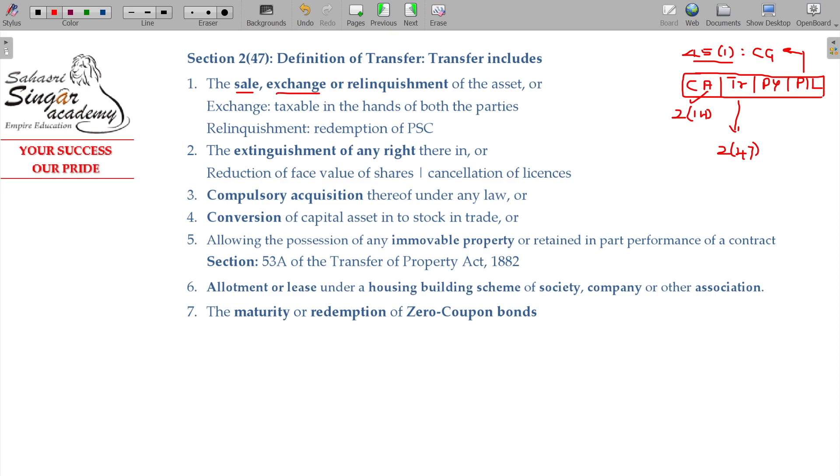In general understanding, when we do transfer, we do sale. When we do sale, we do exchange or relinquishment. We will transfer. When we do exchange, we do relinquishment. When we do exchange, A and B.